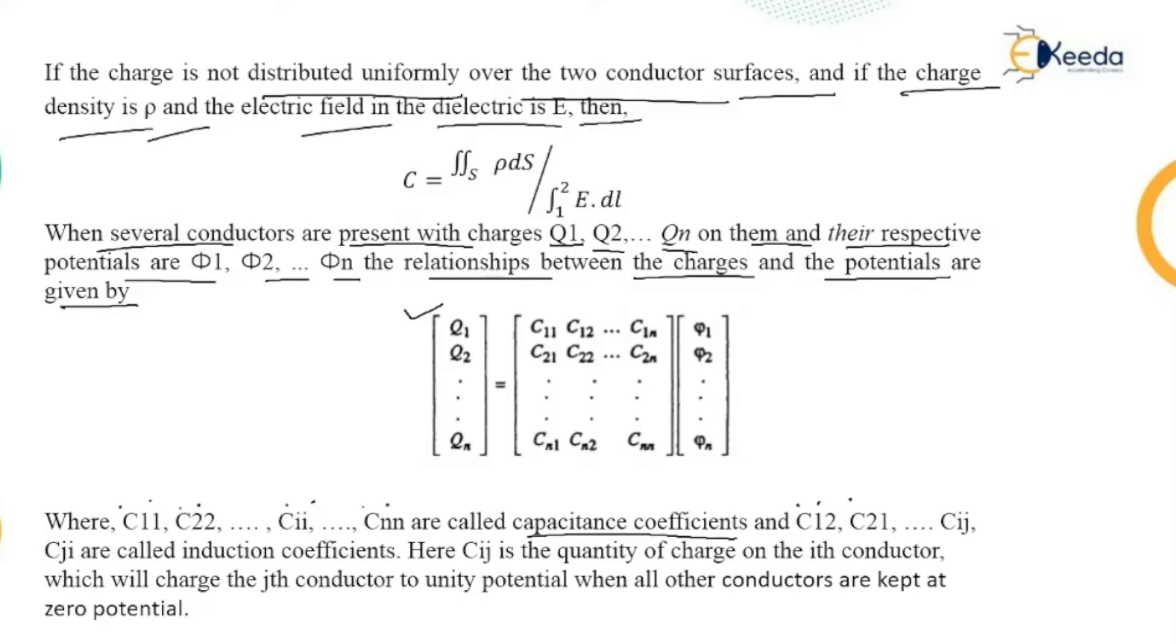C₁₂, C₂₁, Cᵢⱼ, Cⱼᵢ are called induction coefficients. Here Cᵢⱼ is the quantity of charge which will charge the j-th conductor to unity potential when all other conductors are kept at zero potential.